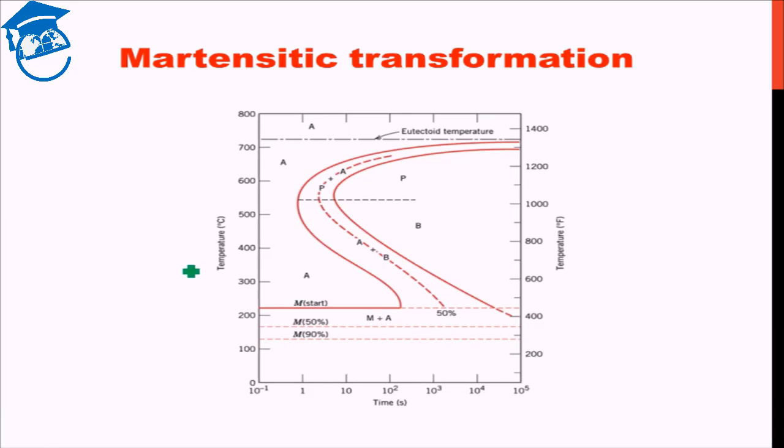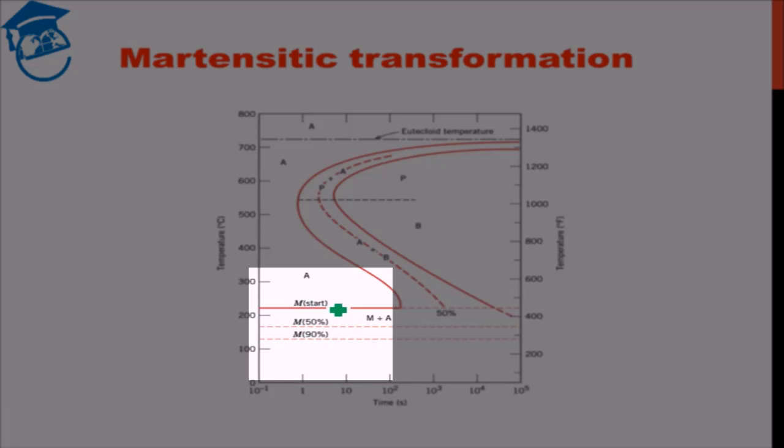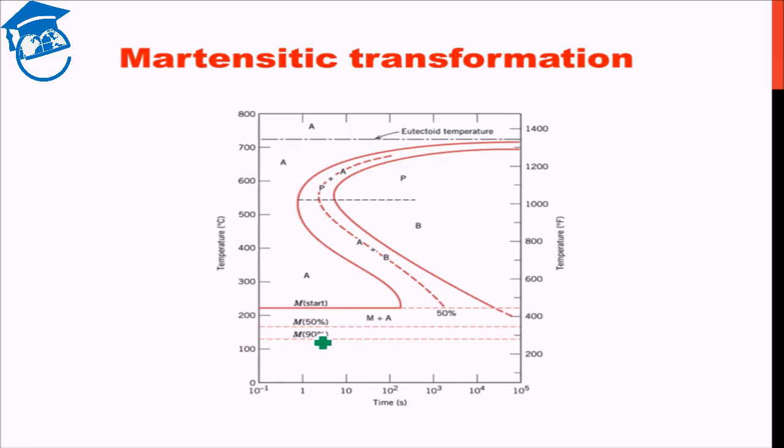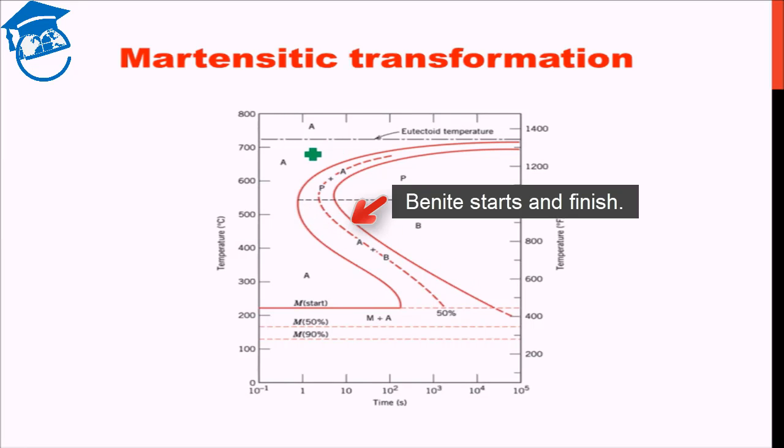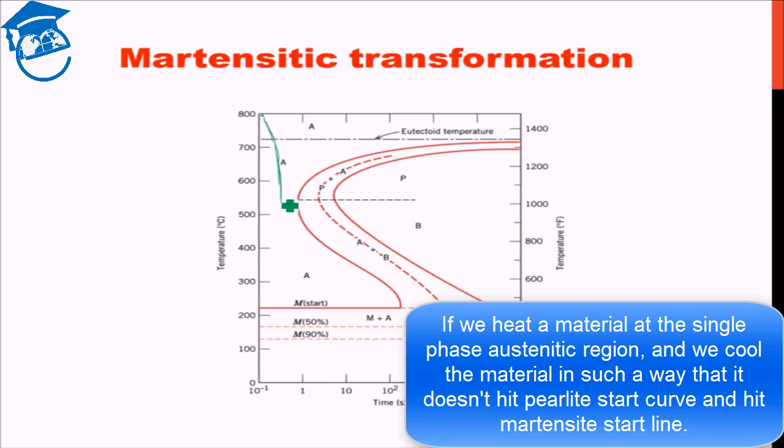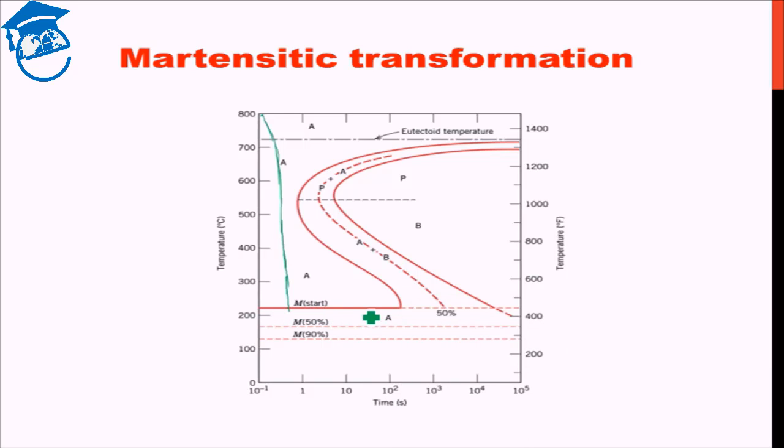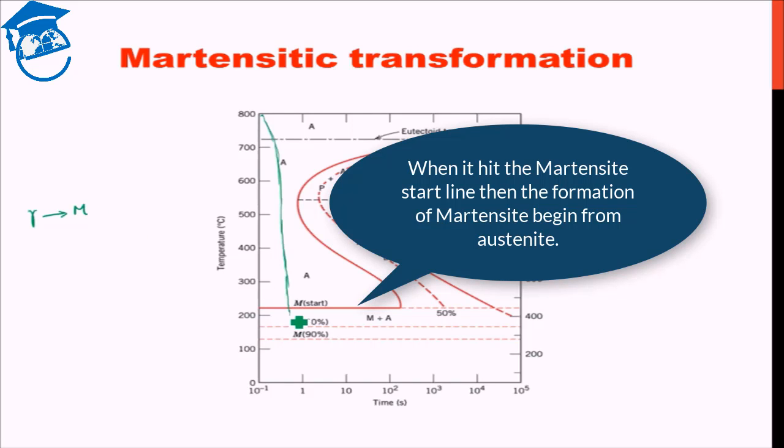If you remember from the previous lecture, I showed you the curve in the CCT curve. We had these things M start, M 50%, M 90%. This is the pearlite start, pearlite finish, bainite start, bainite finish. Suppose that you take the material and heat it to the single phase austenitic region and you cool the material in such a way that it does not hit the pearlite start curve. Rather, it keeps cooling, it is quenched and it hits the martensite start curve, martensite start line. When you hit the martensite start line, then martensite starts to form from the austenite. Austenite gives rise to martensite.